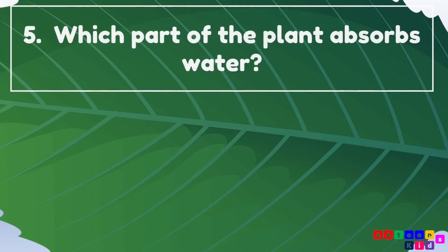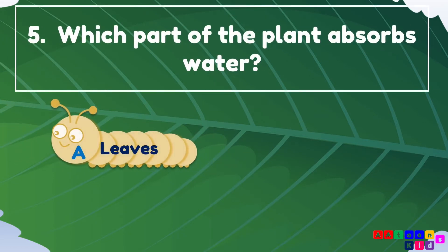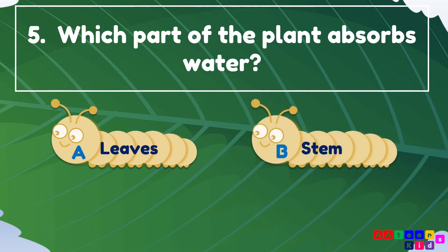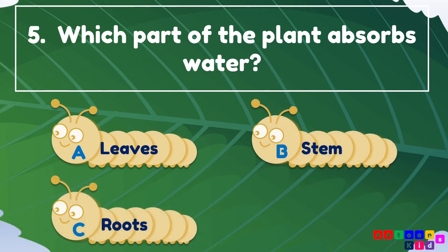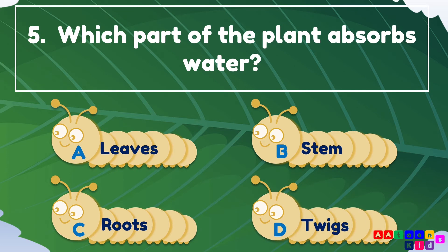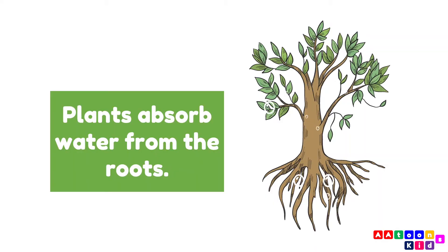Which part of the plant absorbs water? Leaves, stem, roots, or twigs? The answer is roots. Plants absorb water from the roots.